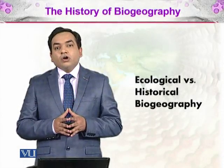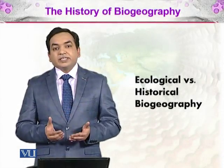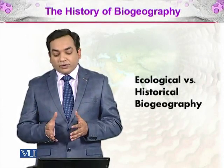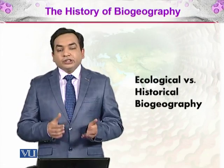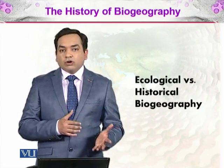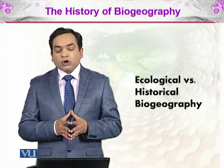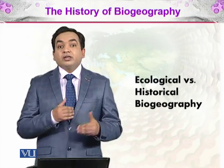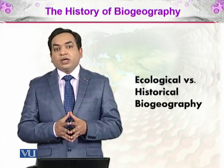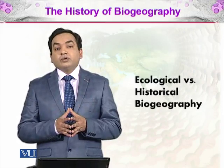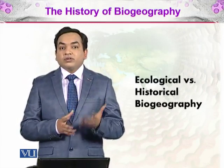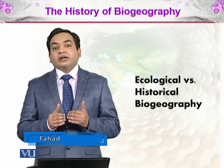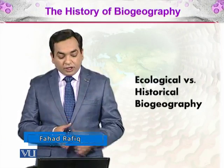In the history of biogeography, we will be discussing the ecological versus the historical biodiversity. Ecological biogeography is related to ecology, while historical biogeography covers the fossil record and how different organisms had different histories, how they distributed themselves onto different continents. We will be discussing how both of these are different from each other.